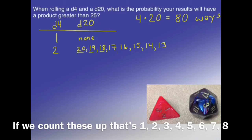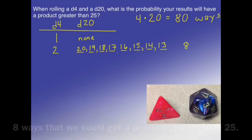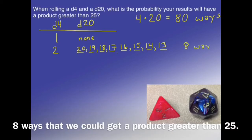If we count these up, that's 1, 2, 3, 4, 5, 6, 7, 8 ways that we could get a product greater than 25.